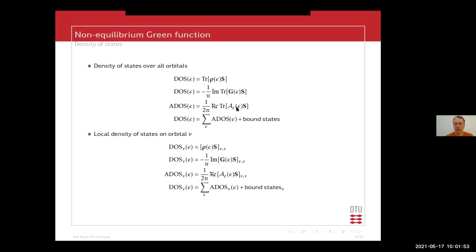You also have your spectral density of states, which is the density originating from a specific electrode. This lets you figure out how a specific part of your device region couples to a specific electrode, which can be quite interesting. Another way to describe your density of states is by summing all your spectral density of states over all electrode indices. You also have bound states — one way to figure out if you have a bound state is by calculating both quantities and checking whether they are equal. The difference between the two gives you where your bound states live.